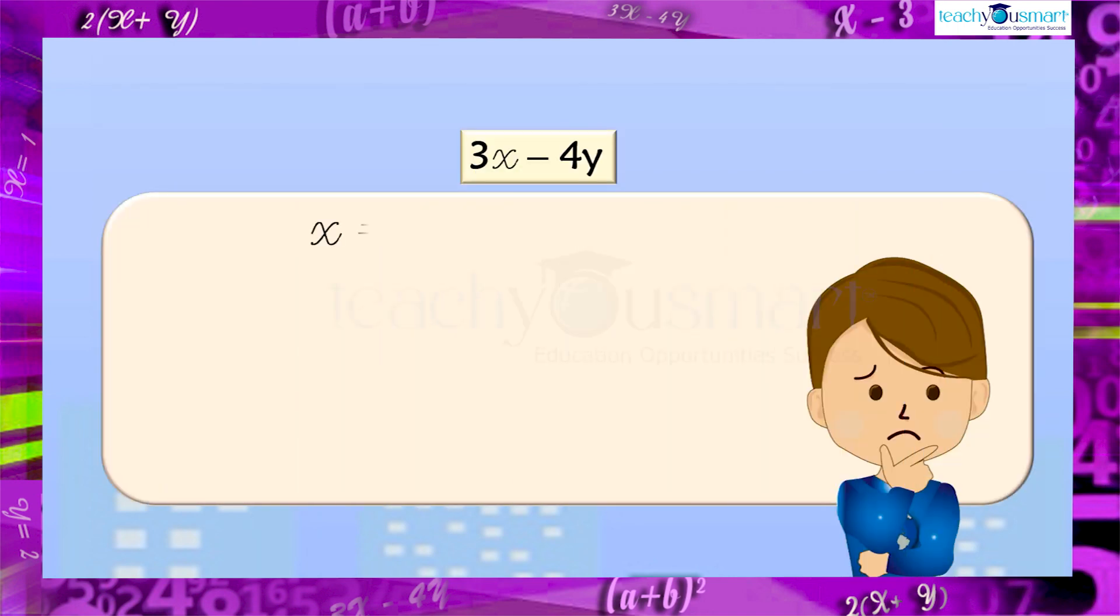If x is taken as two and y as one, then three x minus four y becomes three multiplied by two minus four multiplied by one, equals six minus four equals two. That is, three x minus four y equals two.